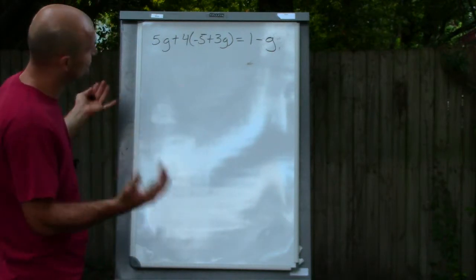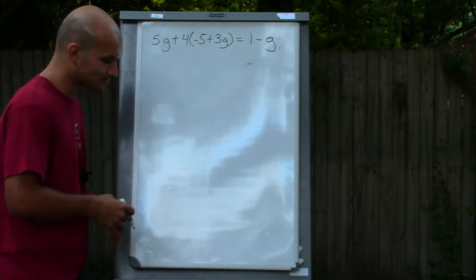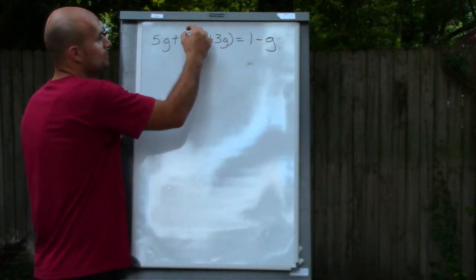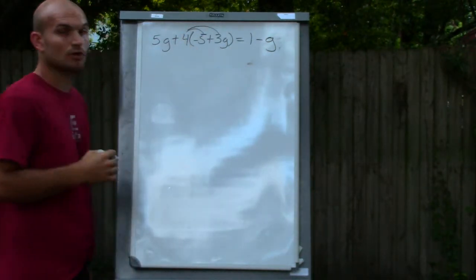Then I look for any exponents, no exponents or no powers. So the next thing is multiplication and division. Well, I notice I can multiply the four times both of those terms.